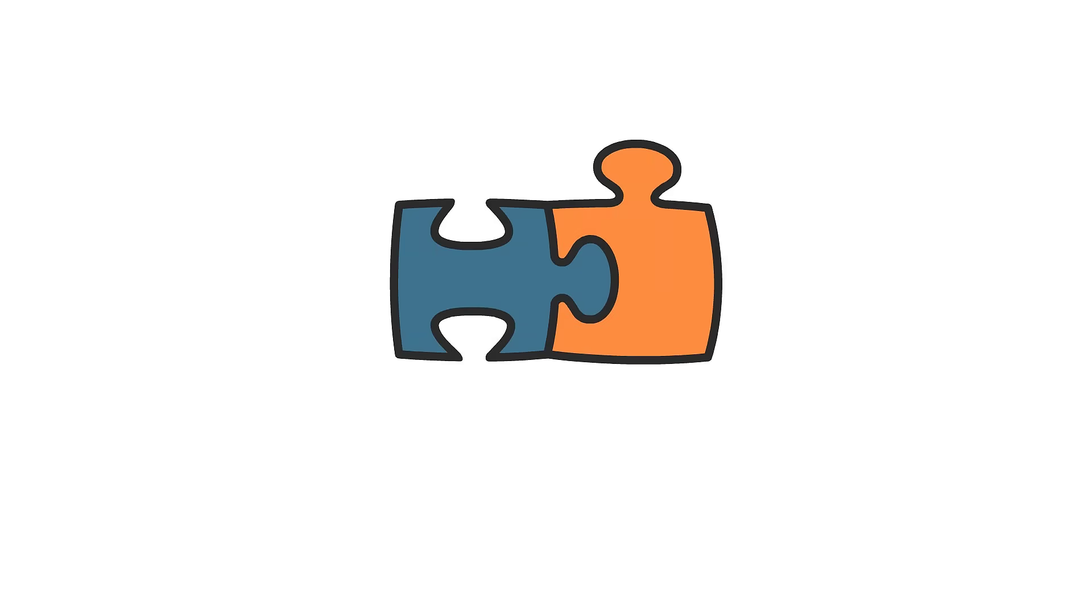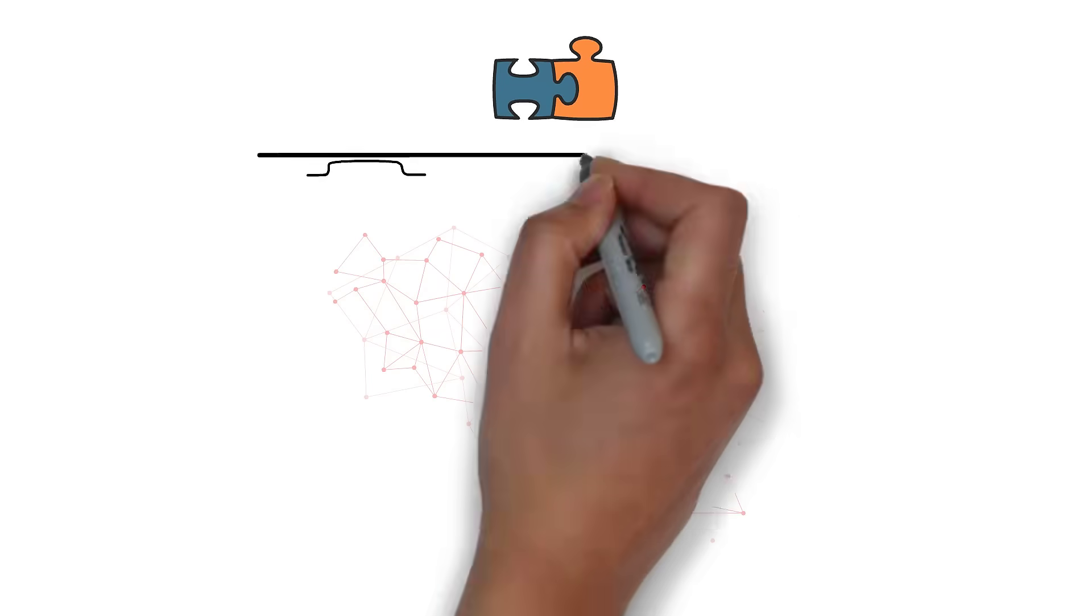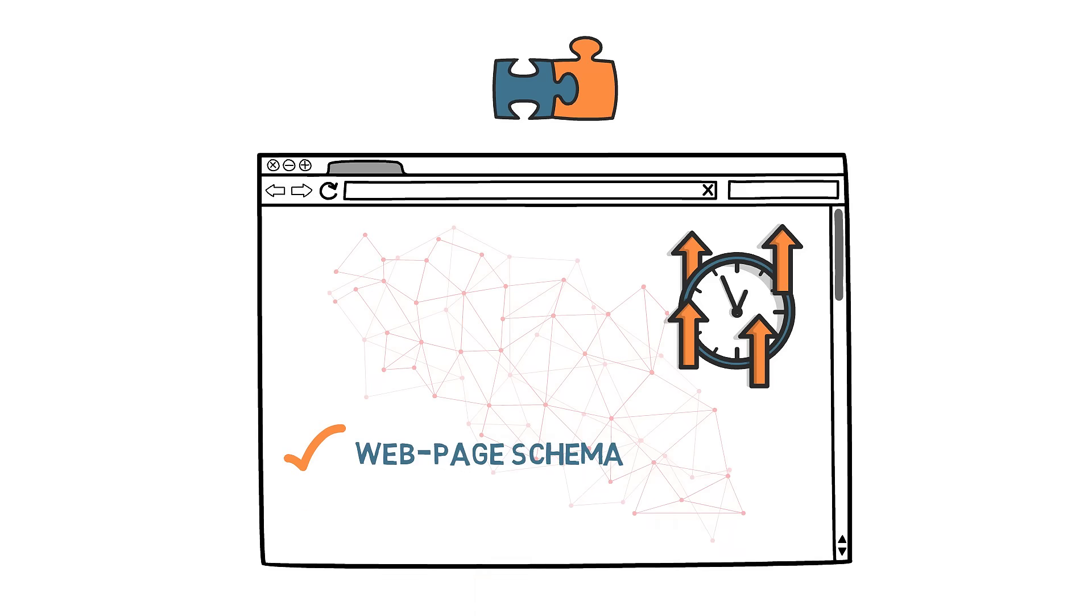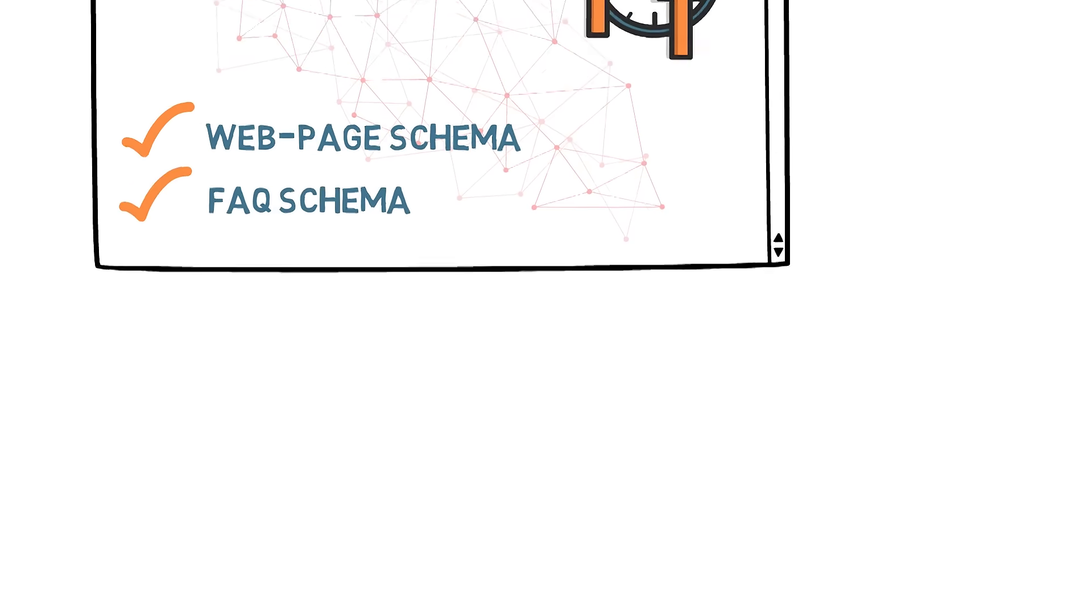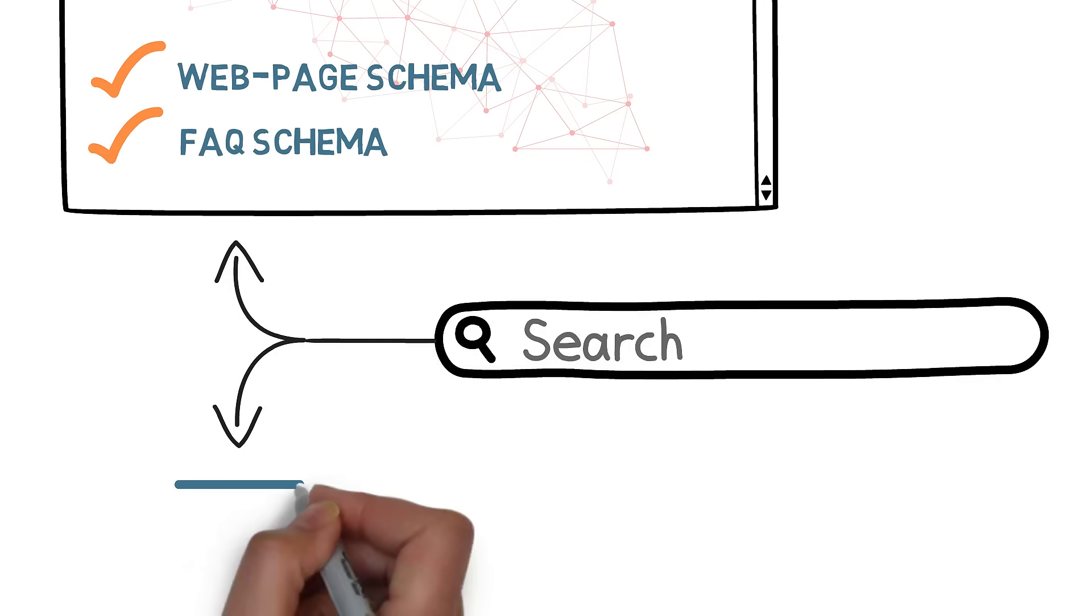Finally, connect the dots. Inlinks will automatically generate and optimize internal links across your entire site, saving you hours, and will instantly build web page schema and FAQ schema on existing content so you don't have to. Search engines use this schema to better match searches to your content.